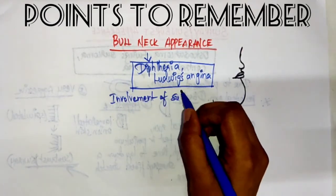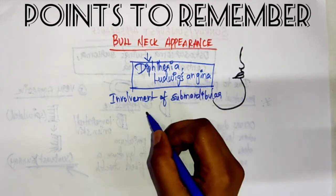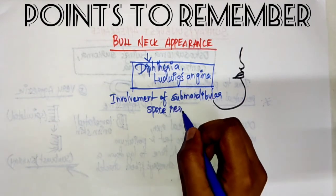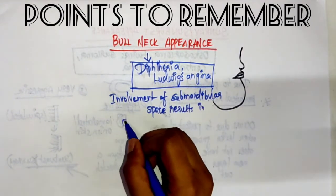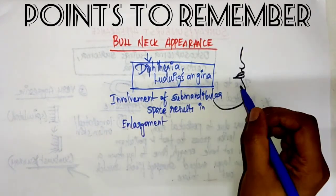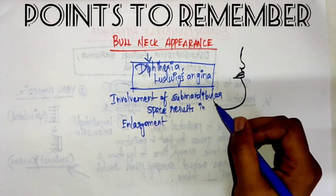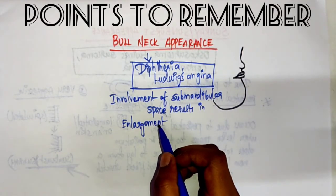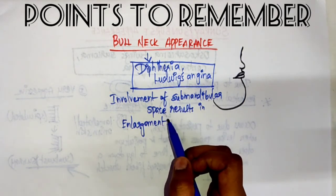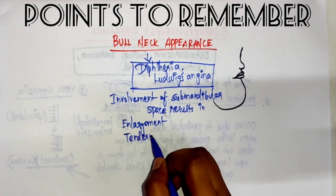This is because of the involvement of the submandibular space. Involvement of the submandibular space results in enlargement. In this picture, you can see the neck part — from your mouth to the neck — it is enlarged. You just have to know some of the features of this appearance, the first being enlargement.